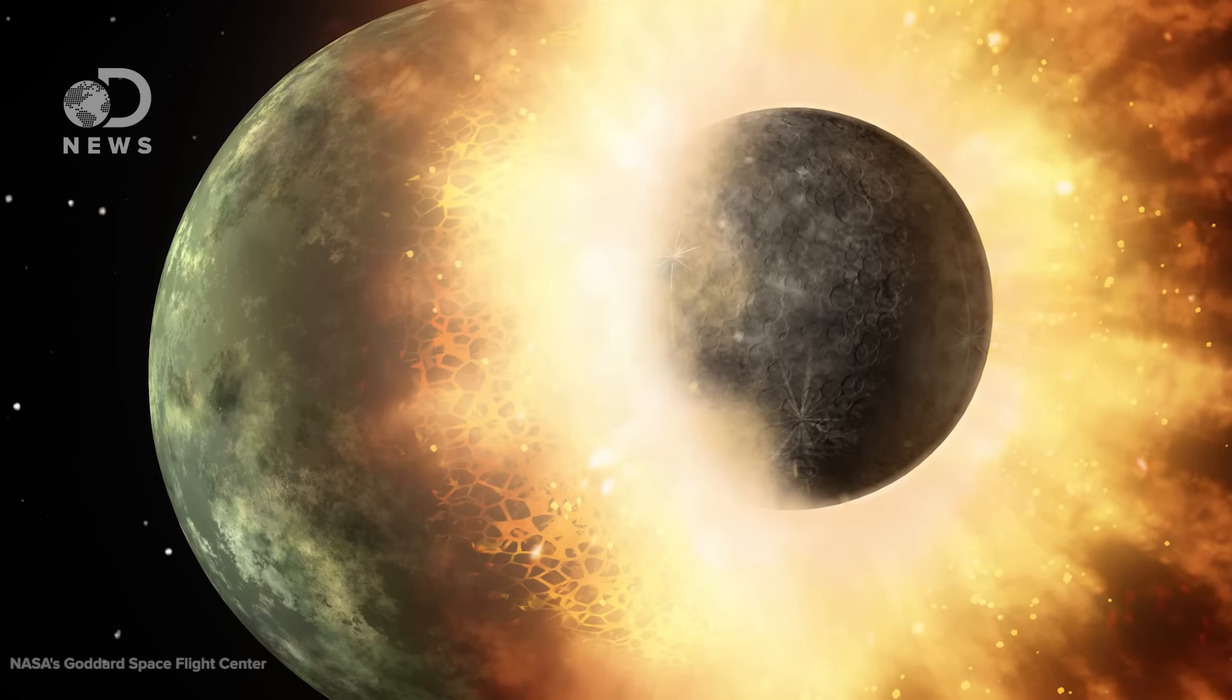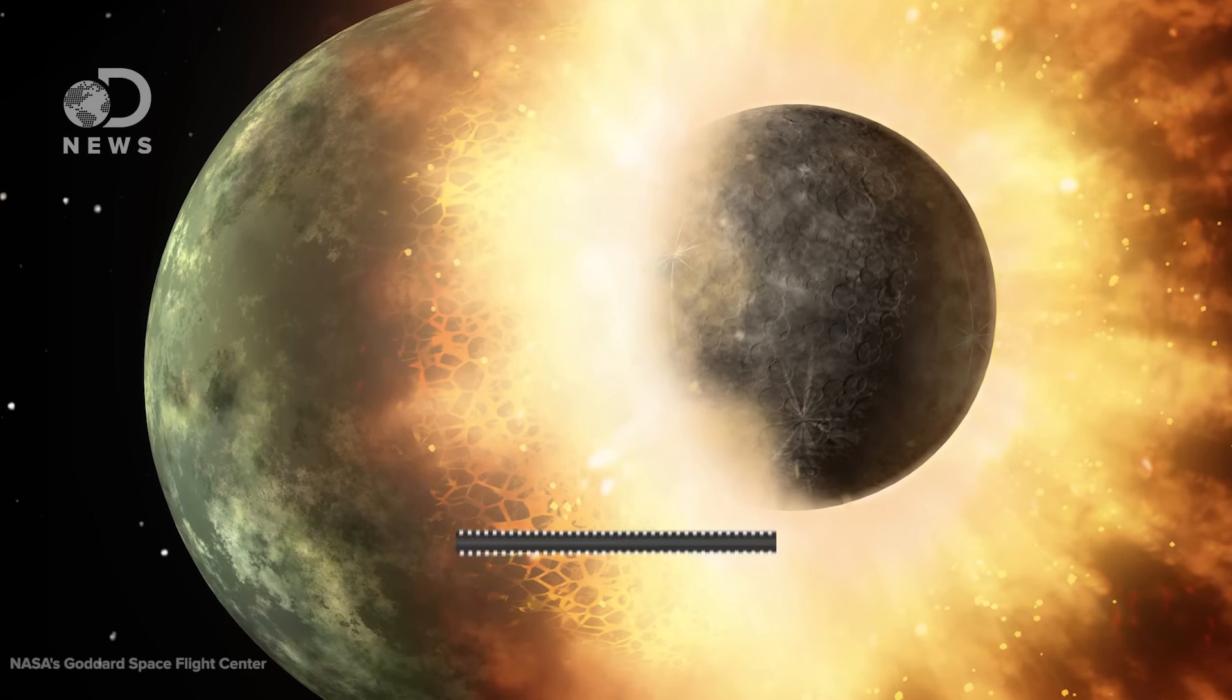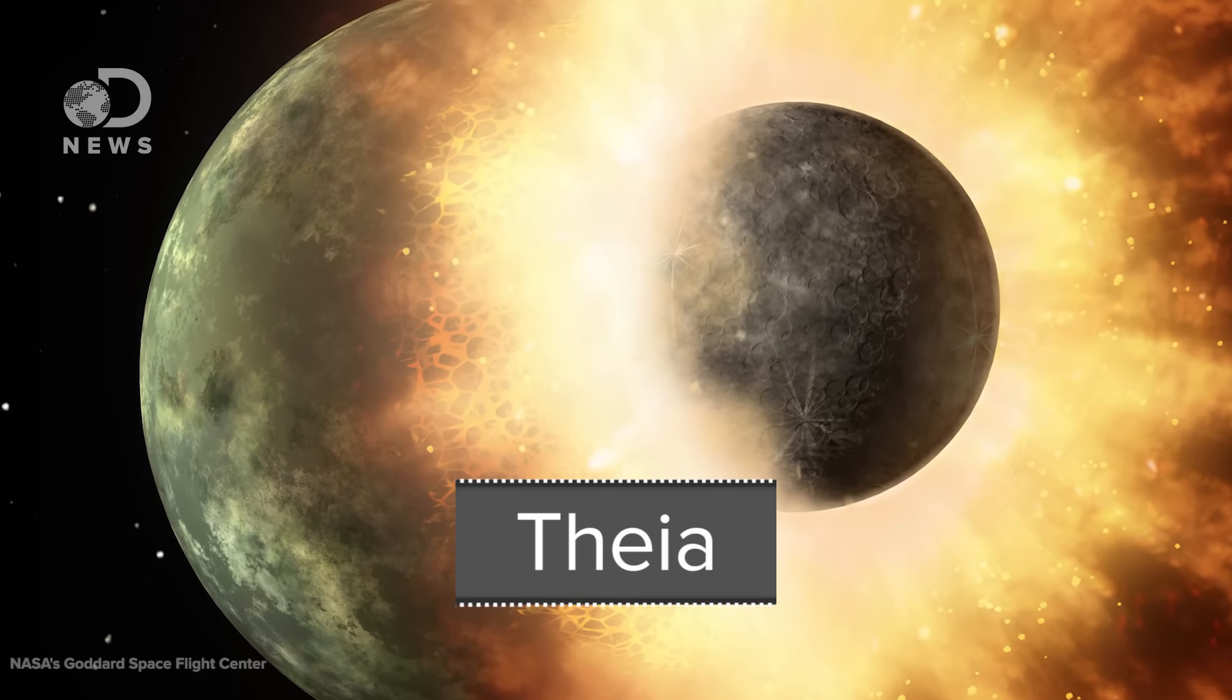the Giant Impact Hypothesis does all its moon forming in one go. Baby Earth was smacked by another Mars-sized object called Theia, made a huge debris cloud, and then that cloud reformed into the moon we see today.